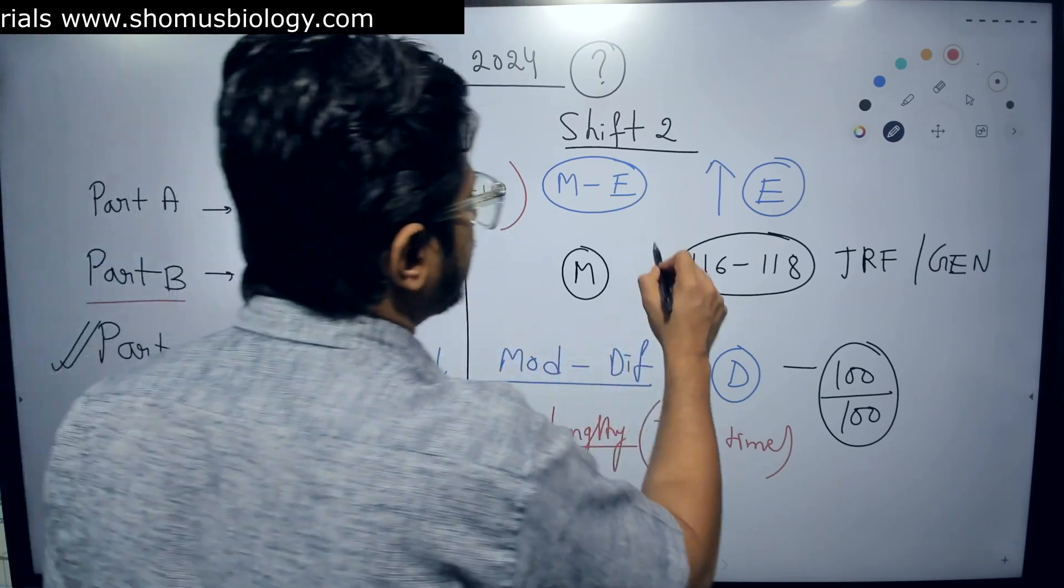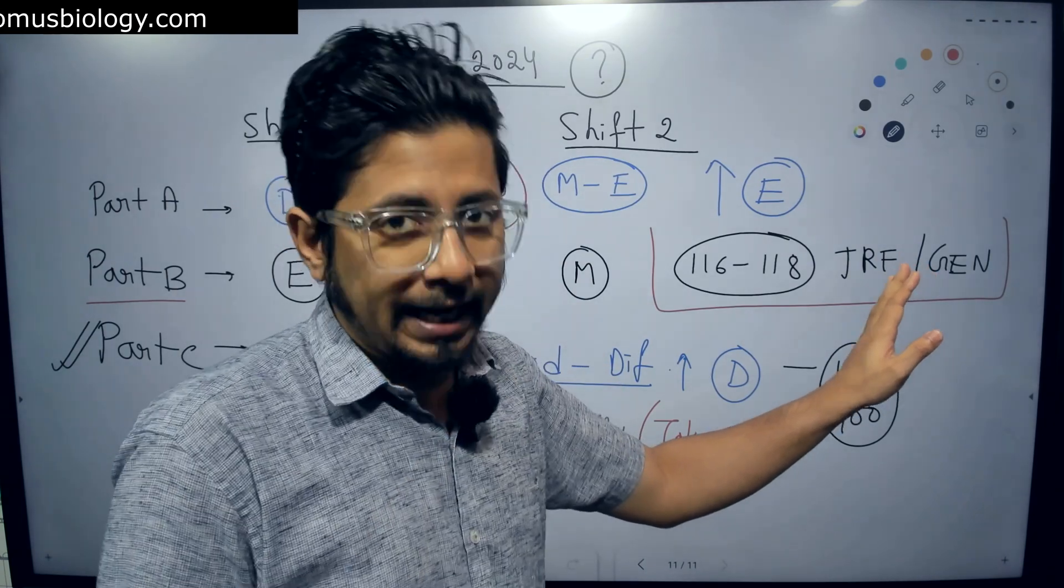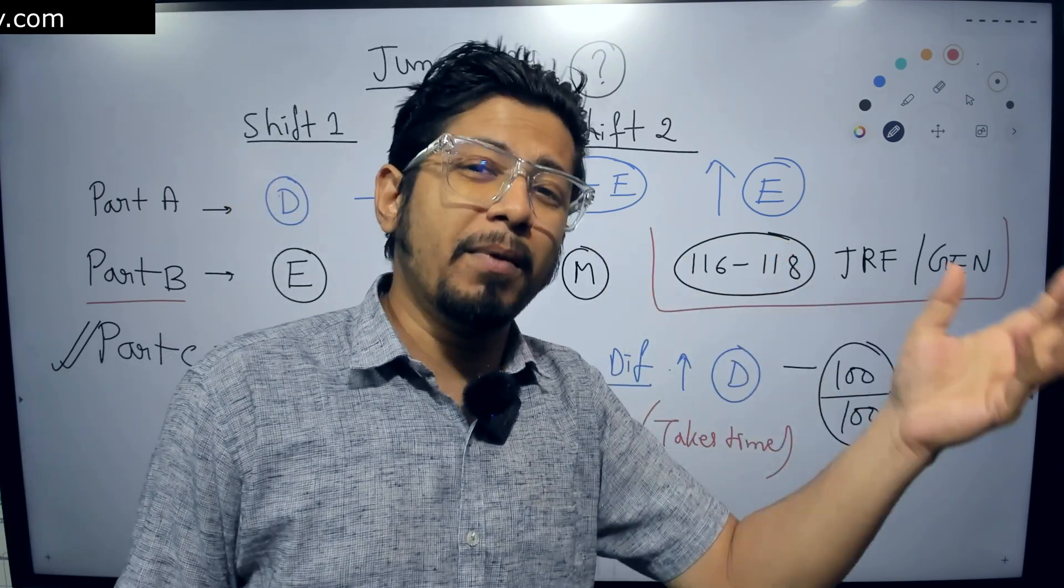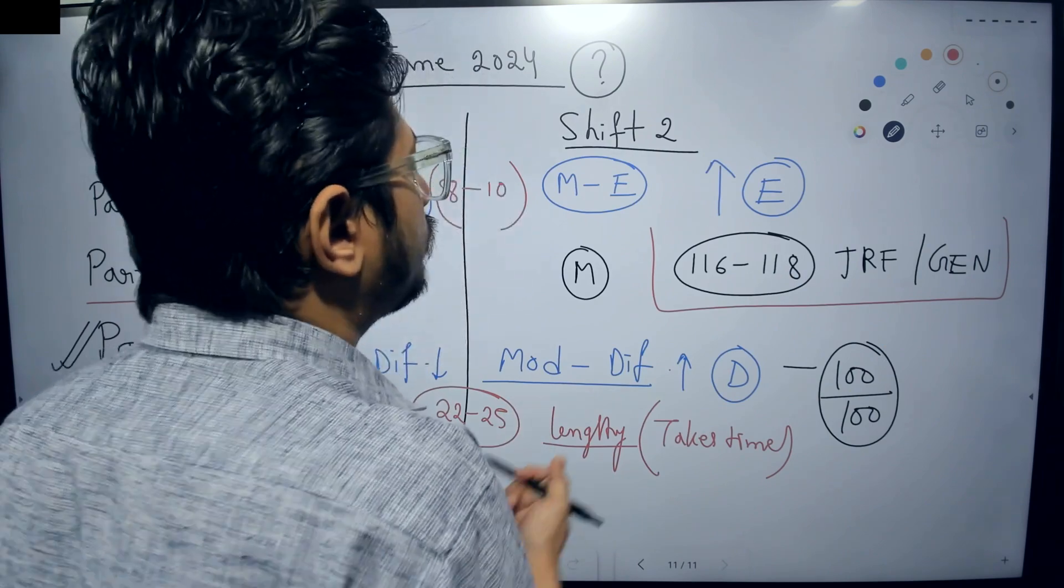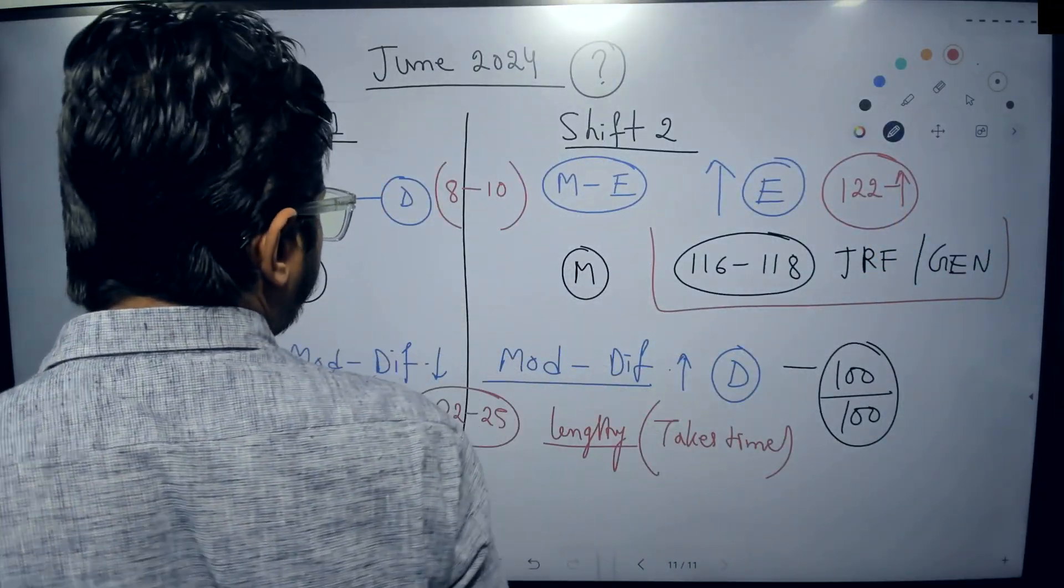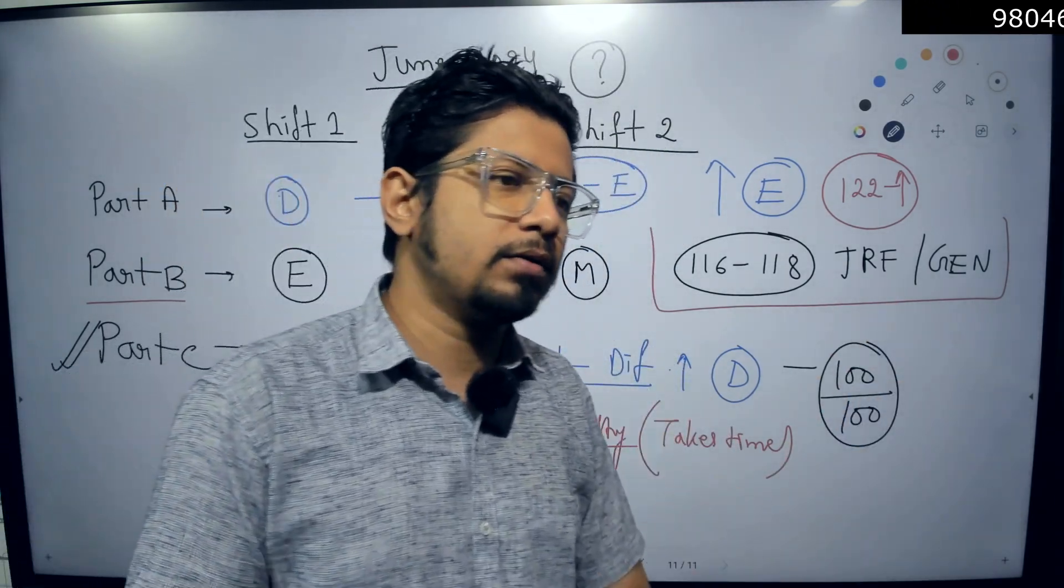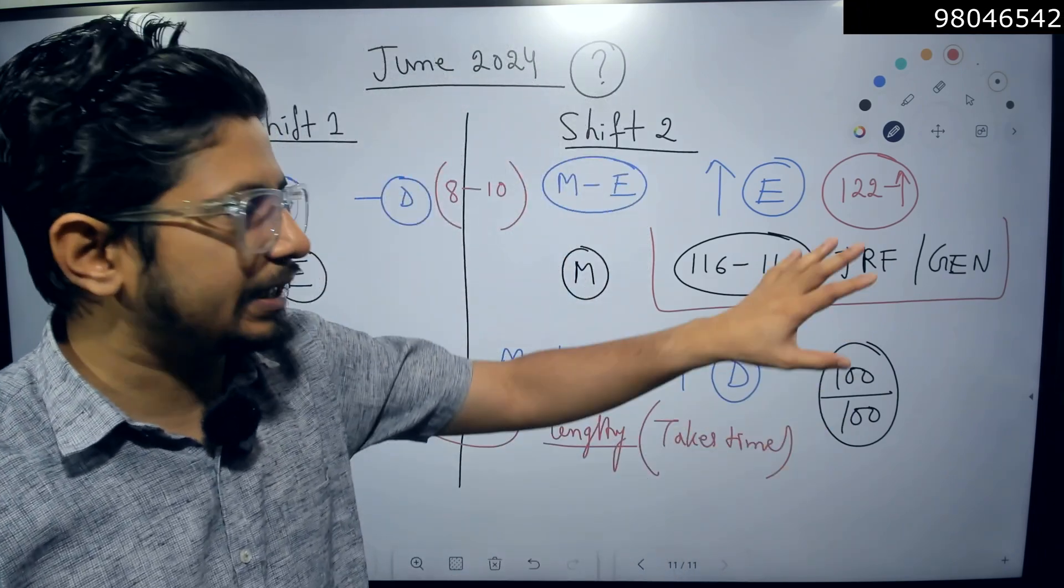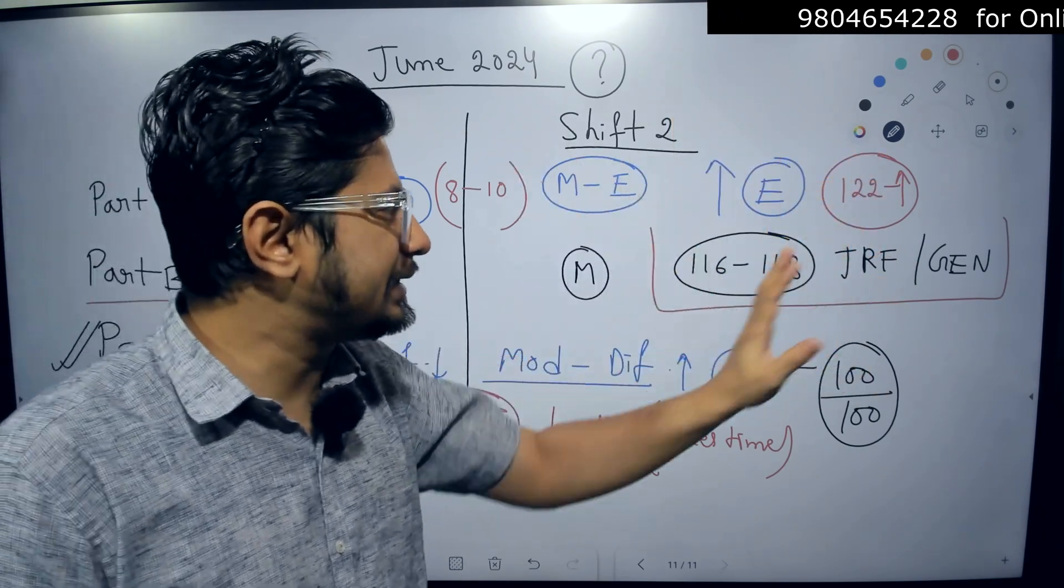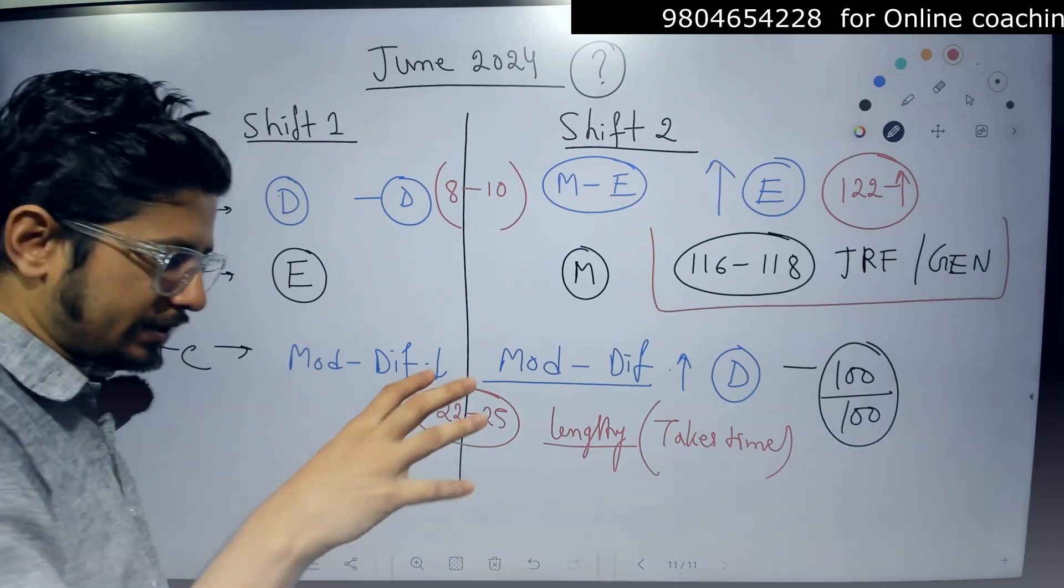There are two scenarios now. If the exam seems to be genuine, then the cutoff should belong to 116 to 118. That is the maximum cutoff for general category JRF candidates. But if the cutoff is more than 62%, like 122 or above, you can assume that there is foul play in there. I don't know whether they will do it or not, whether they manage it cleverly or not. But that is the reality. Those 250 people would have scored much higher, so the cutoff would get high. That is the overall idea about this June 2024 CSIR NET Life Science exam.